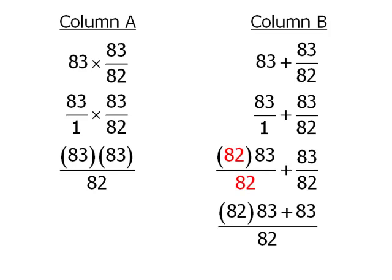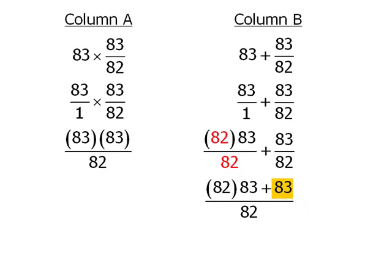Now at this point it may not seem obvious how to combine the terms in the numerator. Look at it this way. Here we have 82 times 83. We can think of this as being we have 82 83's and to this we're going to add an additional 83. So we now have 83 83's which we can write as 83 times 83.